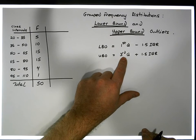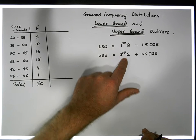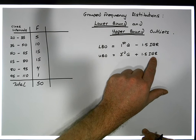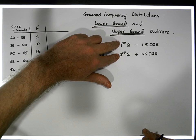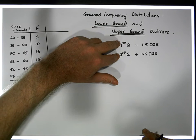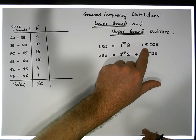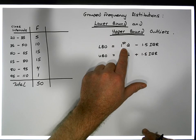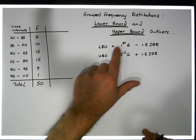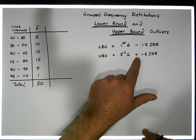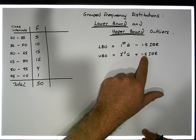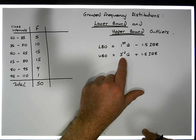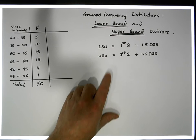So once we have the third quartile and the first quartile, we can calculate the interquartile range — the difference between the third and the first quartile. We either take away 1.5 times the interquartile range from the first quartile to give us our lower bound outlier position, or we add on 1.5 times the interquartile range to the third quartile to give us our upper bound outlier position.